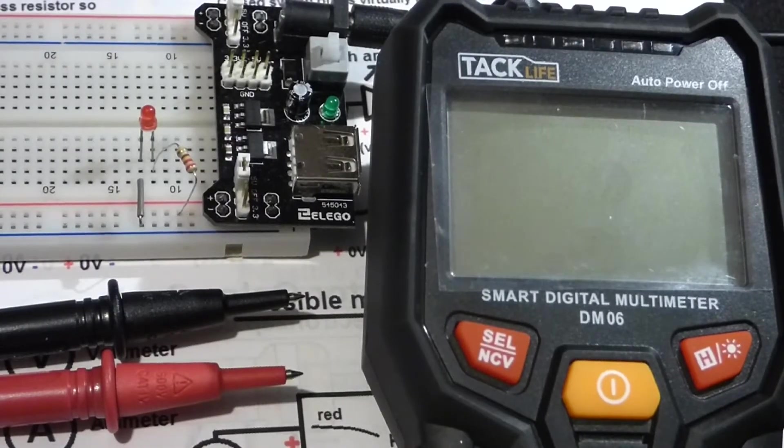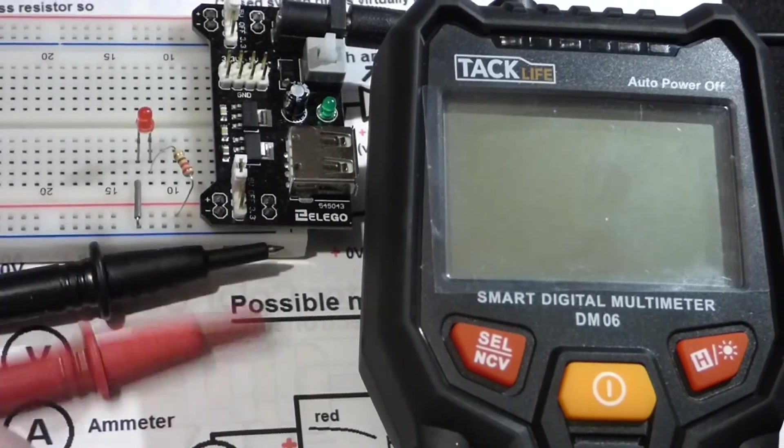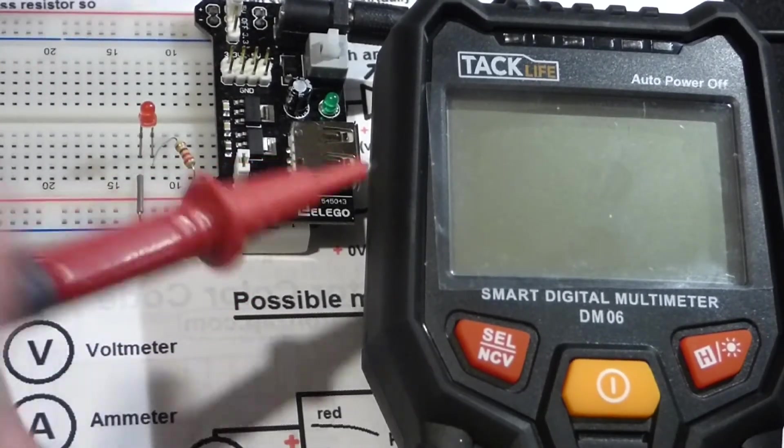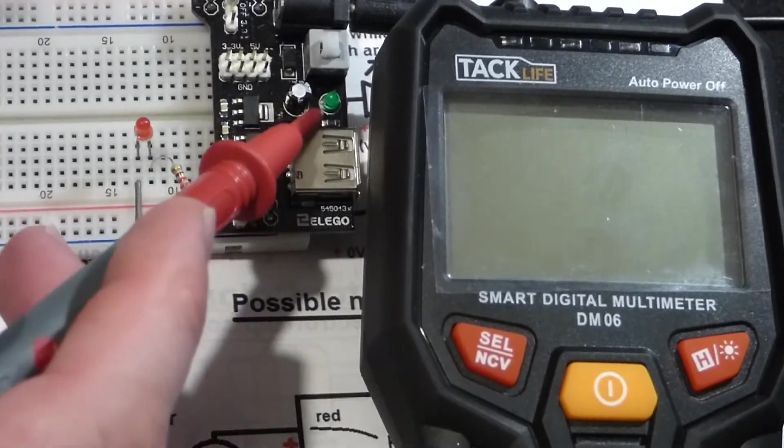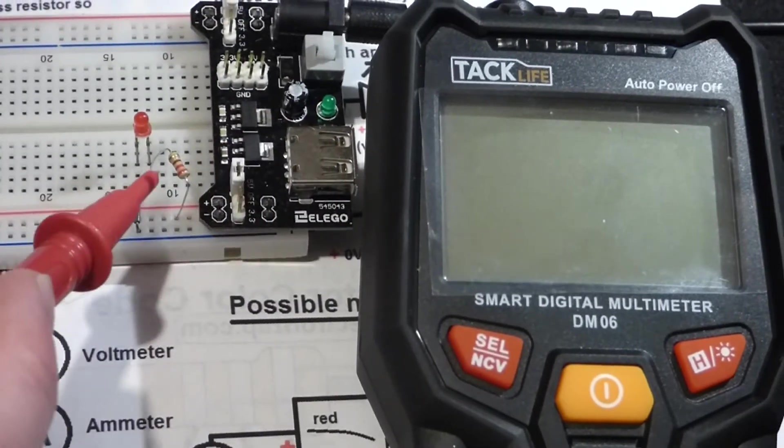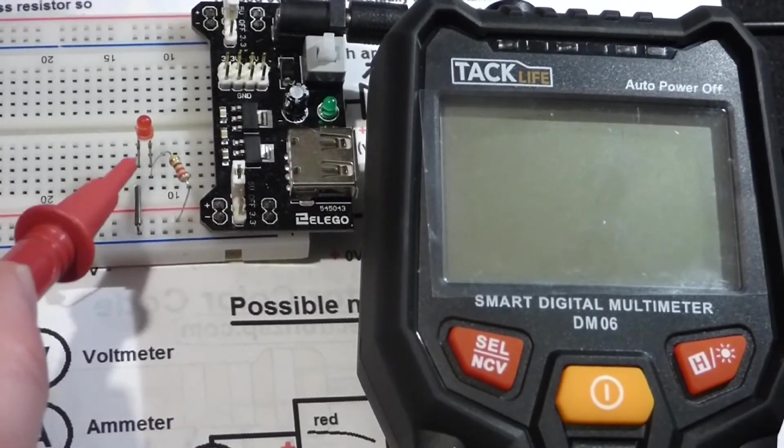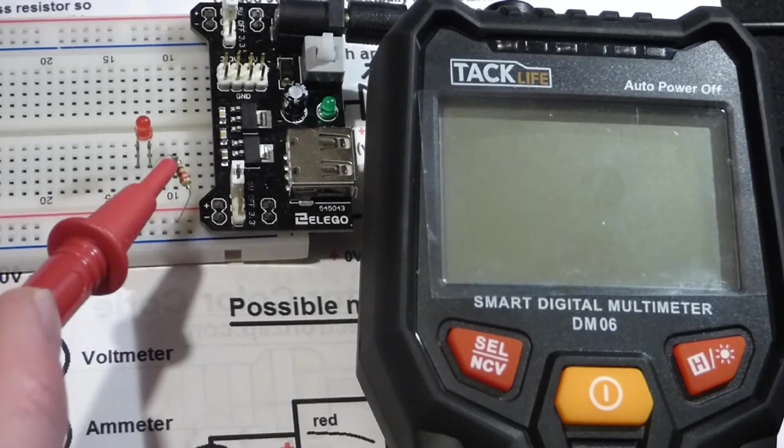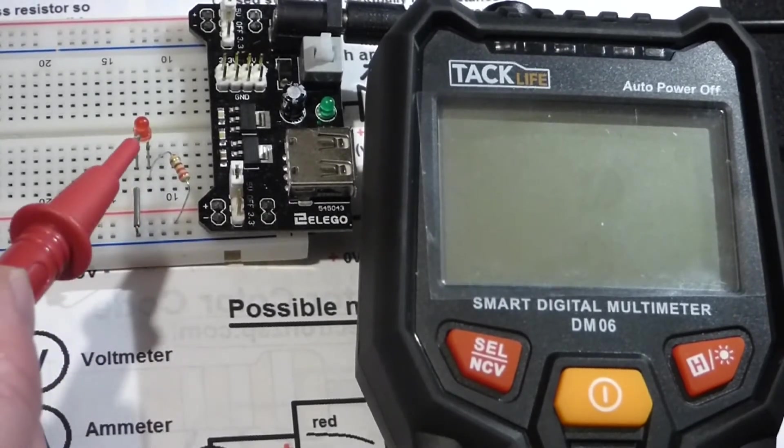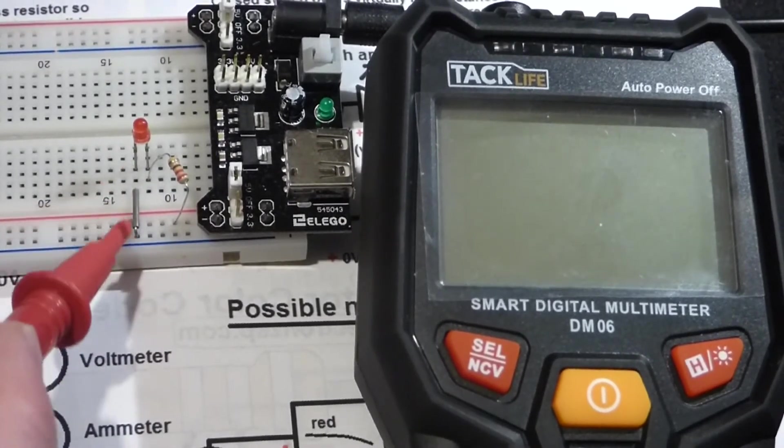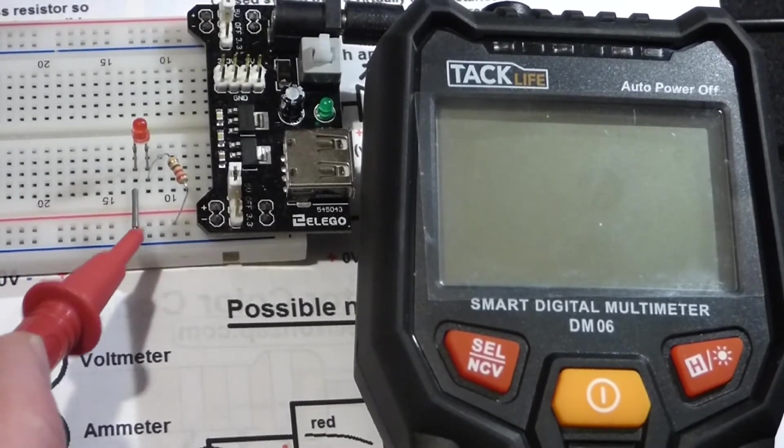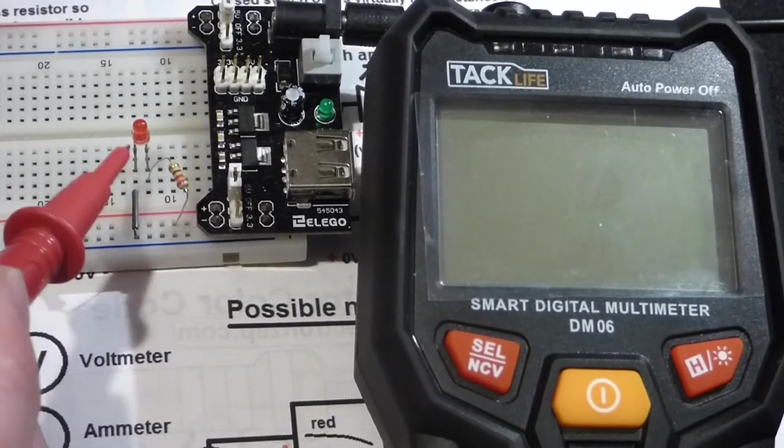Now that we have the probes attached to the meter, we're going to come to this circuit here. This is a 5-volt power supply, but it's off right now. This is a LED circuit, basic LED circuit with a protective resistor. This LED is forward biased. Short lead goes to the negative rail here, long lead here is connected to the resistor.